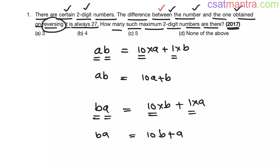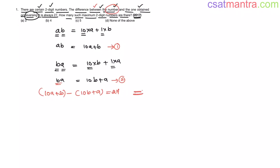Now it is said that the difference between the number, that is 10A plus B, and the one obtained on reversing it, that is 10B plus A, is always 27. This equals 10A minus A, that is 9A, minus 10B minus B, that is 9B. This equals 27. Taking 9 common, A minus B equals 27 divided by 9. So A minus B is 3 my friends.